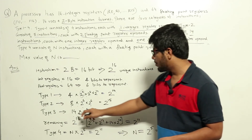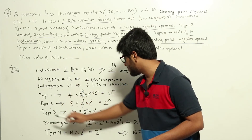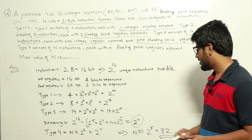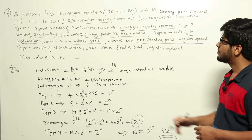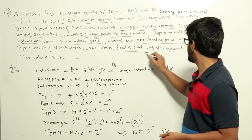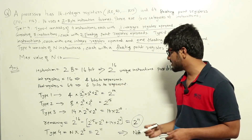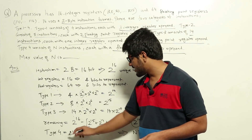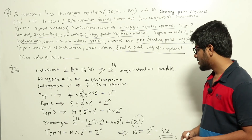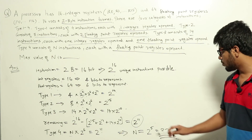The remaining instructions equal 2 power 16 minus the sum of type 1, type 2, and type 3 instructions, which gives 2 power 11 instructions remaining. For type 4, each instruction has one floating point register operand needing 6 bits. So N into 2 power 6 equals 2 power 11, therefore N equals 2 power 11 divided by 2 power 6, which is 2 power 5.